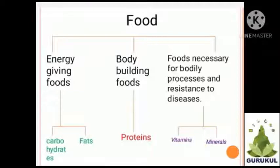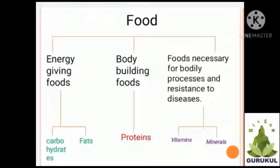For that they have given us one chart. There are three types of foods: energy-giving foods, body-building foods, and foods necessary for bodily processes and resistance to diseases.